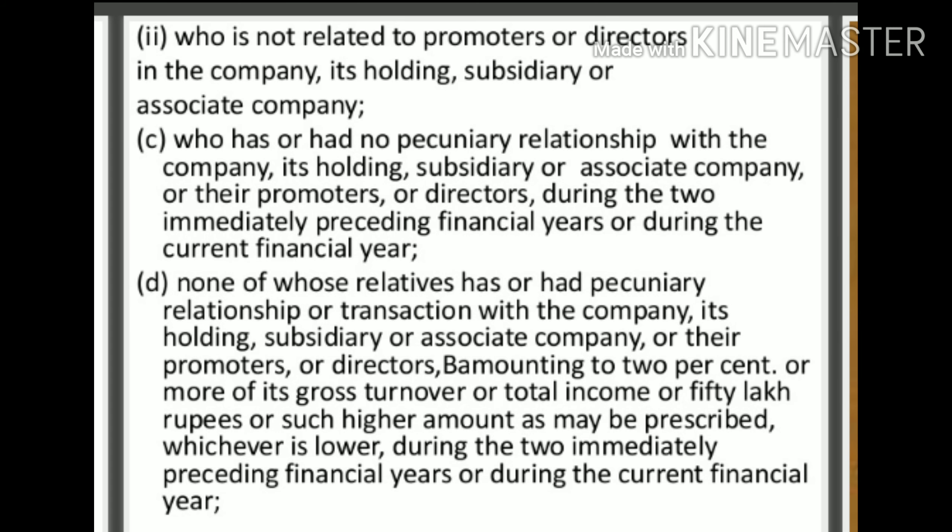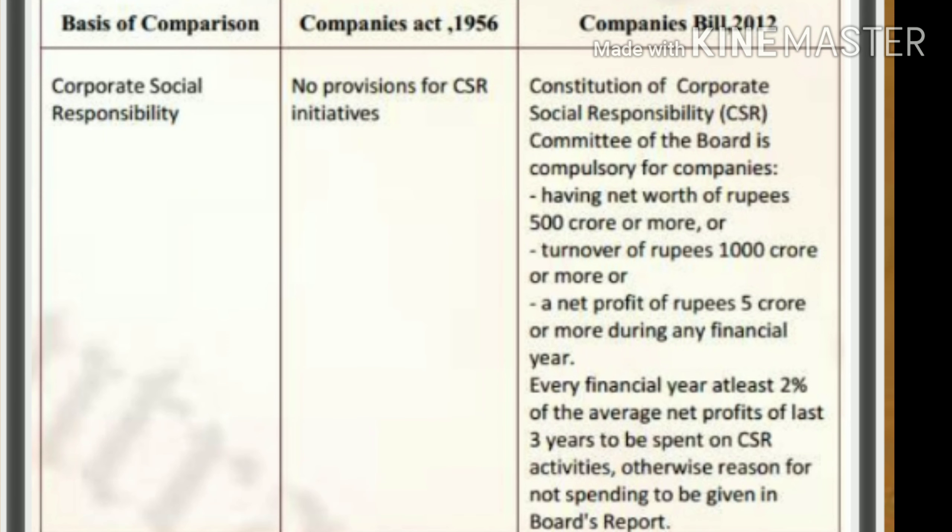An independent director is also one who is not related to the promoter, and who has had no pecuniary relationship with the company, its holding, subsidiary, or associate company, or its promoters or directors, during the two immediately preceding financial years or the current financial year. None of their relatives should have held a pecuniary relationship amounting to two percent or more of the gross turnover or total income, or fifty lakh rupees or such higher amount as may be prescribed, whichever is lower.